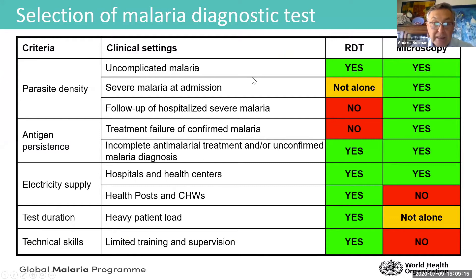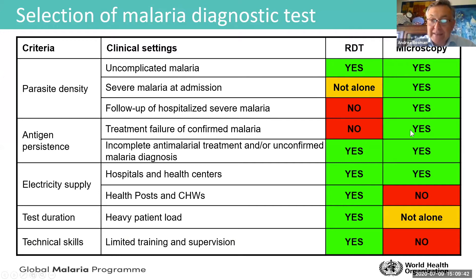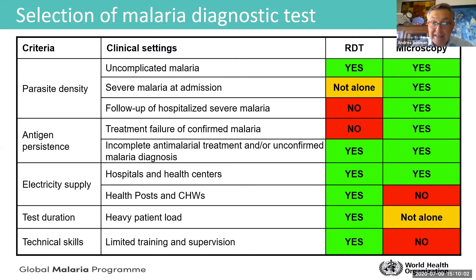There are specific roles for both RDTs and microscopy. For certain functions, microscopy is much better. For instance, in a hospital setting when following up patients with severe malaria, microscopy is the lab test you need. Similarly, if a patient who has been treated returns with suspected treatment failure, you need to use microscopy again. These are two very specific functions for which microscopy is clearly better than RDTs.